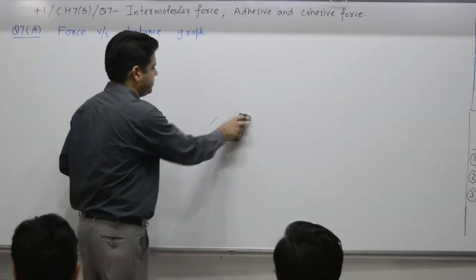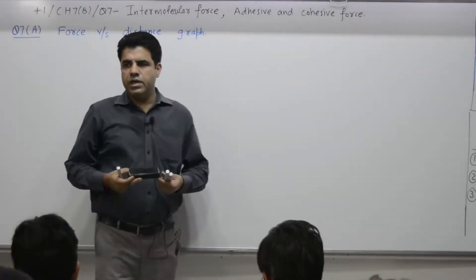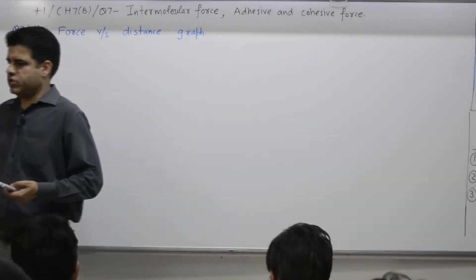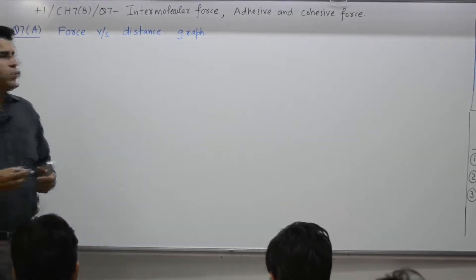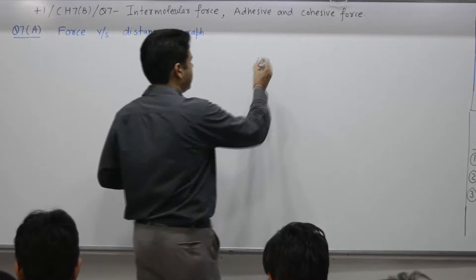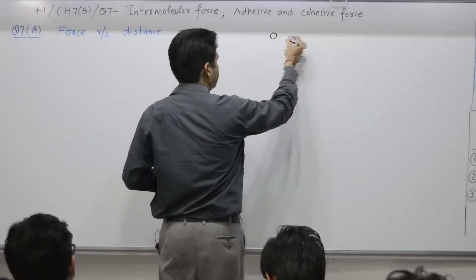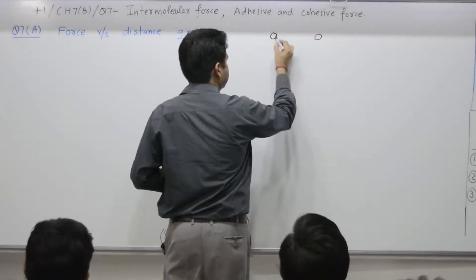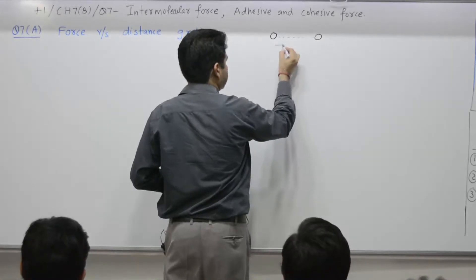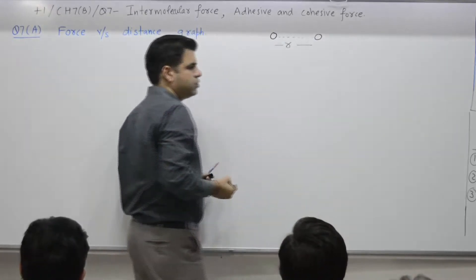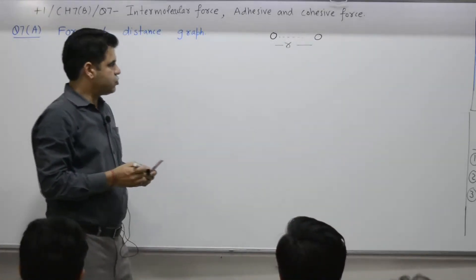Question number seven is about intermolecular force, the force between two molecules. Molecule number one and molecule number two are separated by some distance r. How does the force between the two vary with the distance?